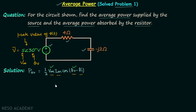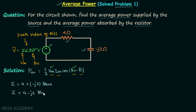Now we will shift our focus to the calculation of Im and θi so that we can find the average power. We can find Im and θi once we have the impedance offered by the resistor and the capacitor combined. They are in series, and therefore the impedance offered by them will be 4 − j2 ohms. This is in rectangular form, and it will be good to convert it to polar form.